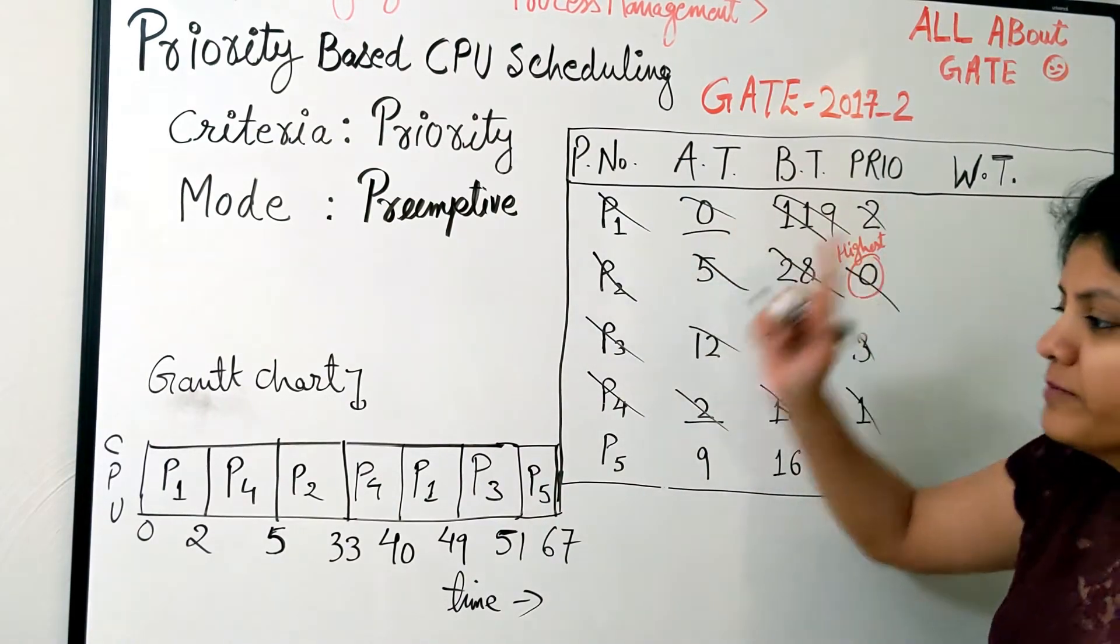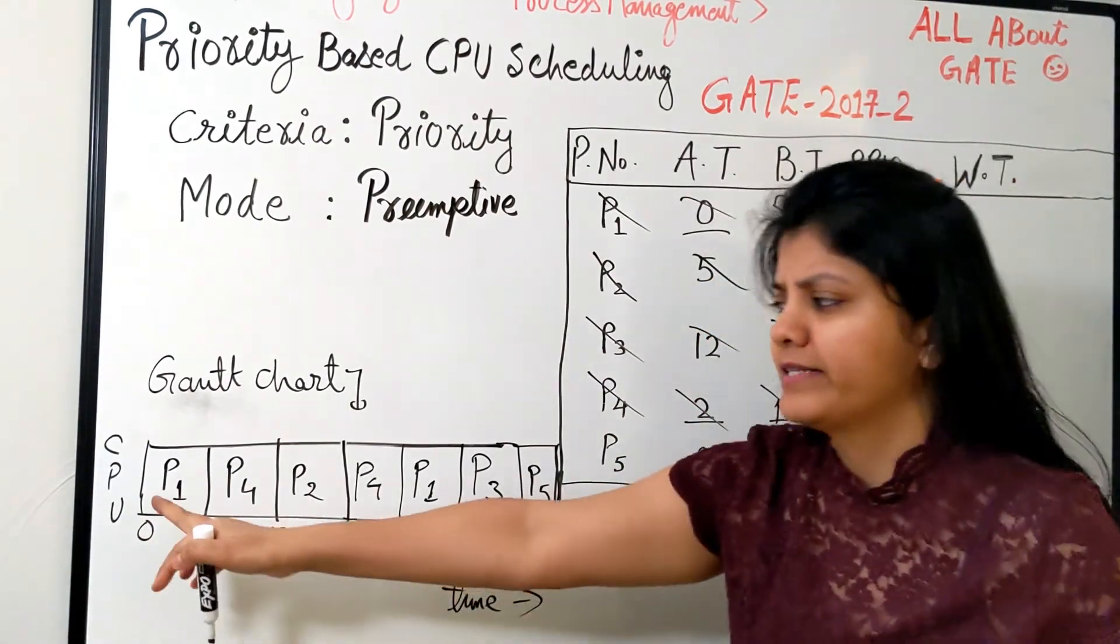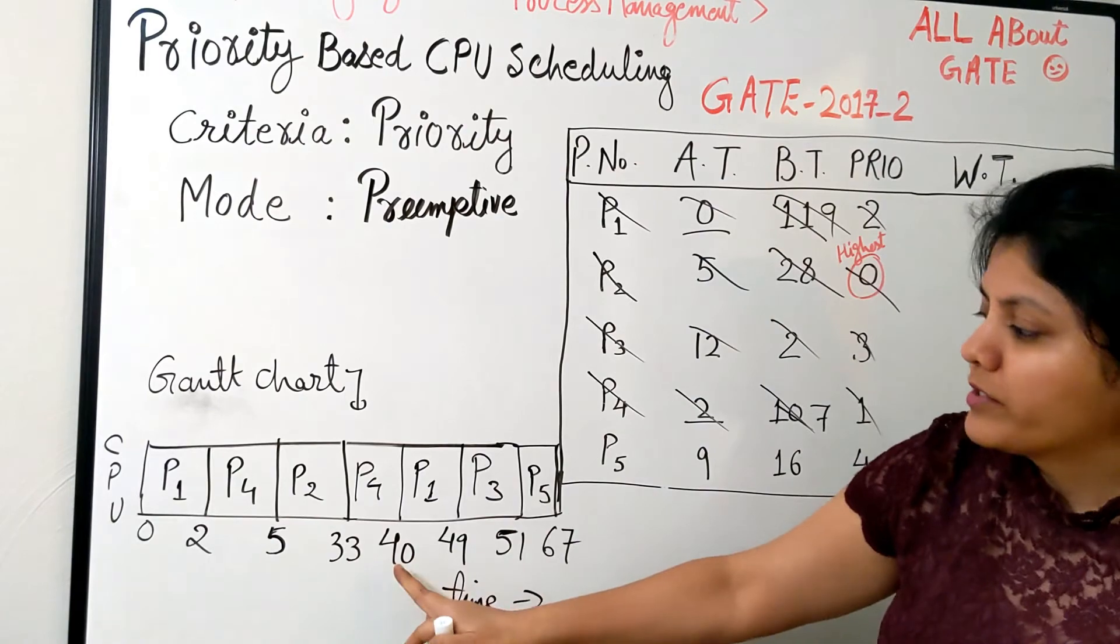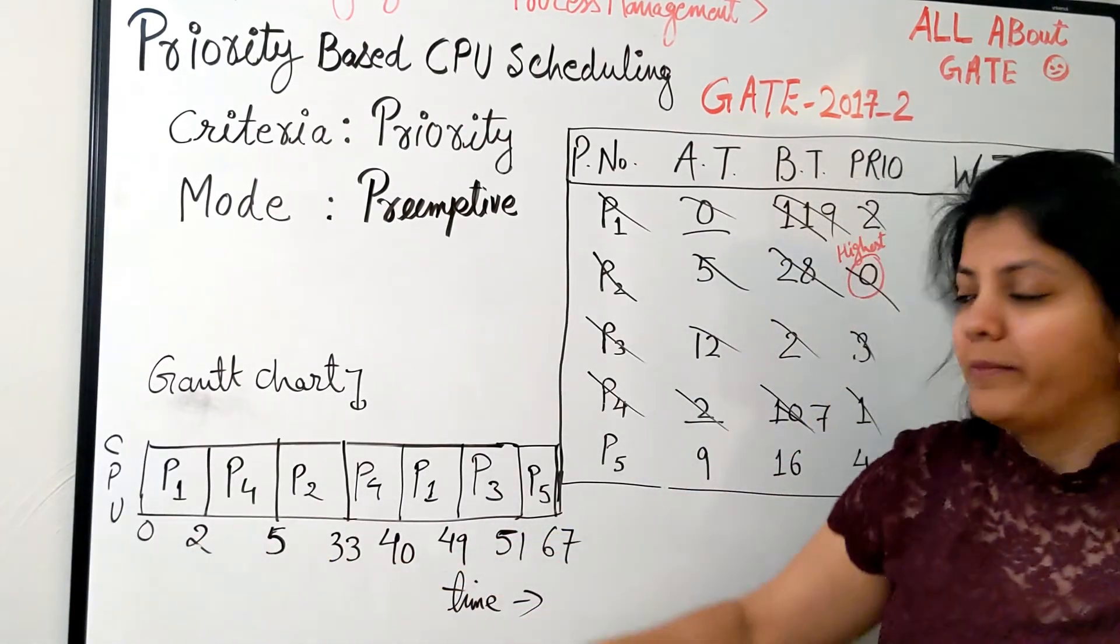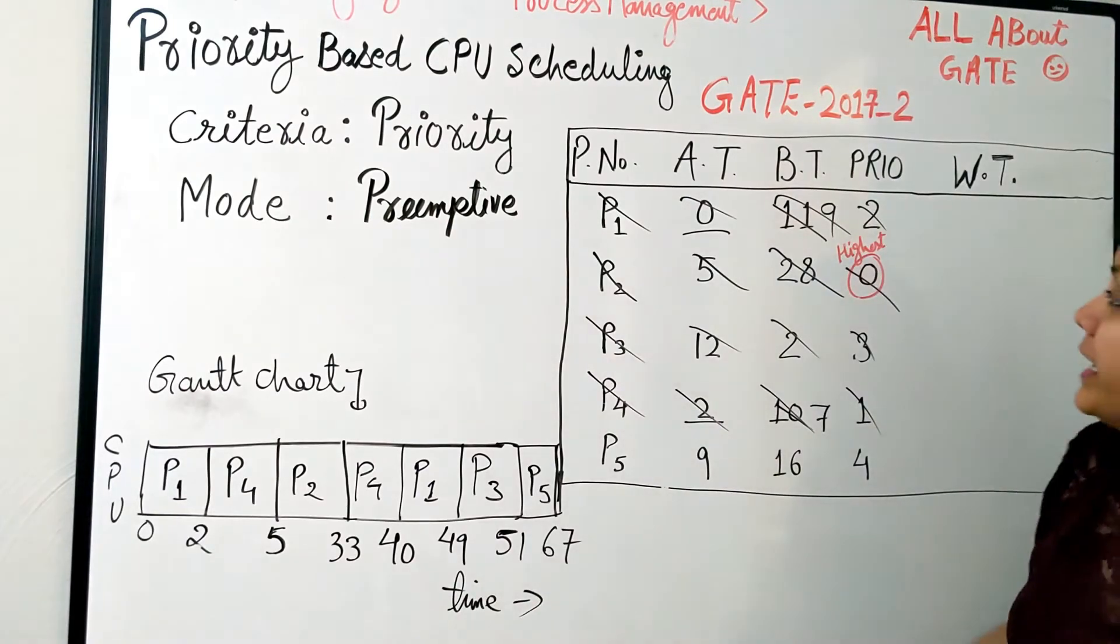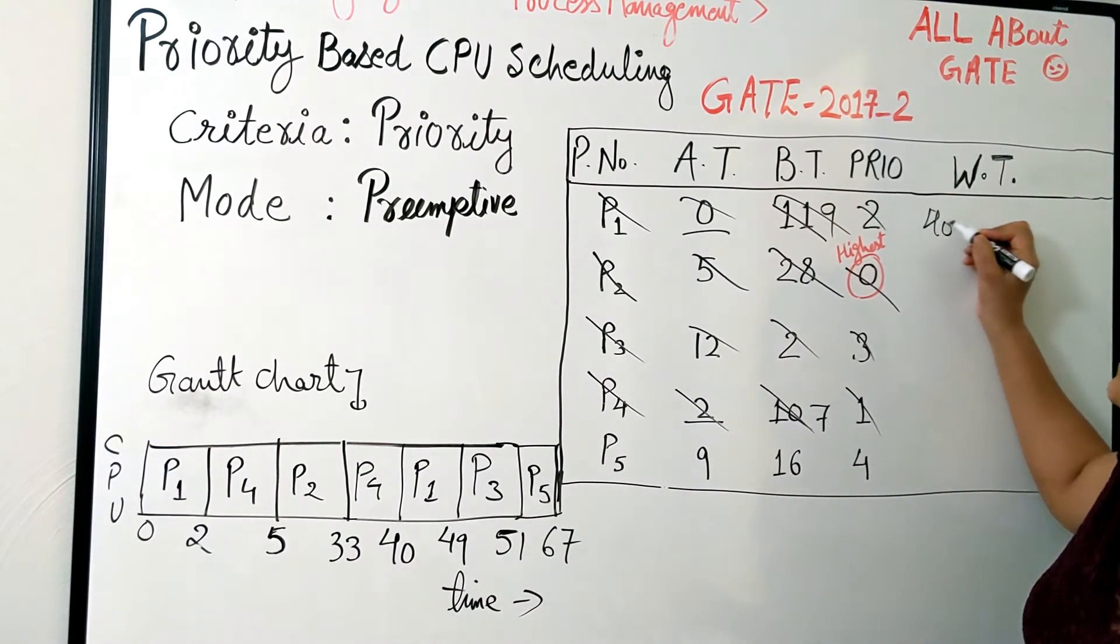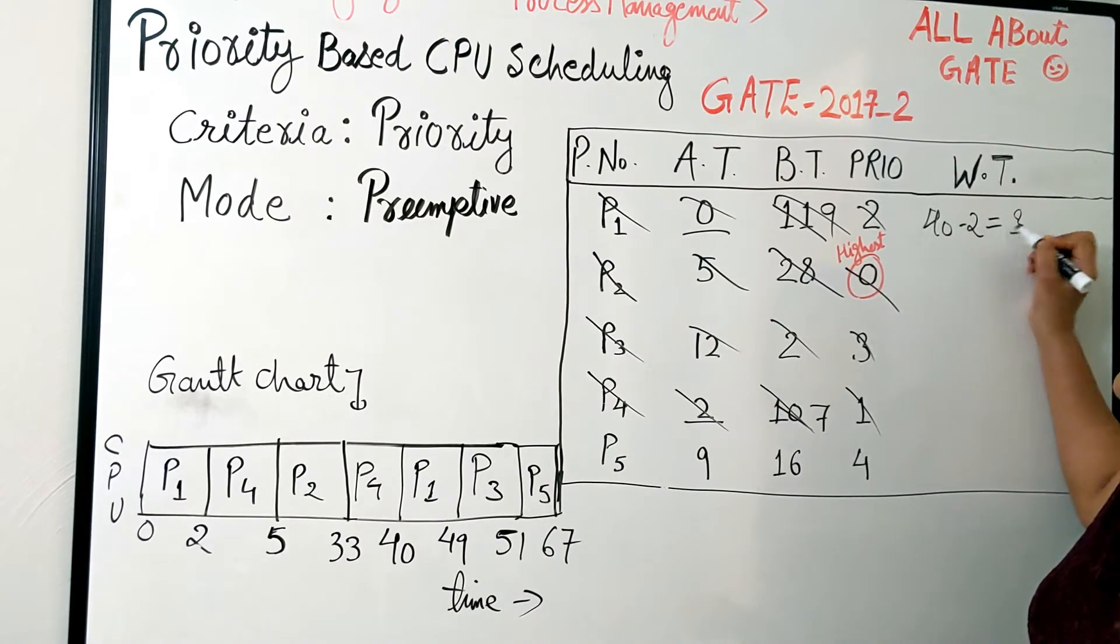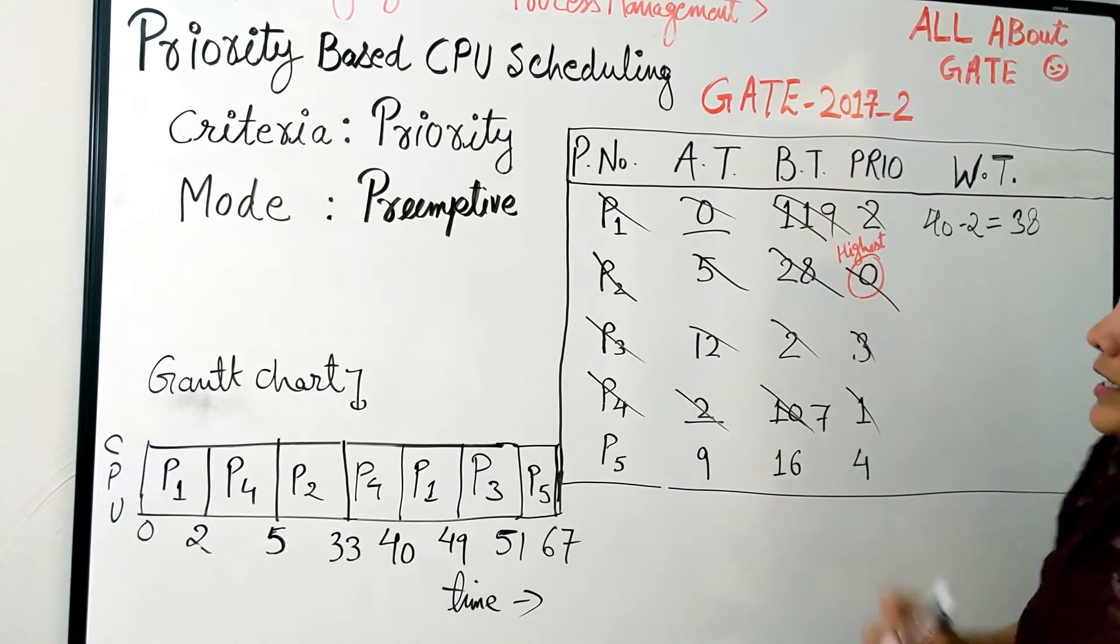But what I'm going to do here is directly from the Gantt chart, looking at the arrivals and the Gantt chart, we'll find the wait time. For process P1, it comes at time zero. First of all, it doesn't have to wait for anything, but after two bursts it got rescheduled at 40. So in this duration from 2 to 40, it's doing nothing but waiting. So it becomes 40 minus 2, that is 38.